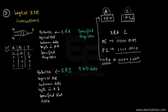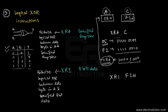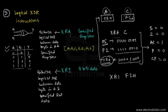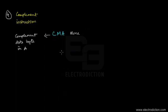To perform the same operation using XRI, we don't need register C. We simply write XRI F2H, which directly XORs F2H with the accumulator data 05H, generating the same result stored in the accumulator. The XRA operand can be any register from A to L. The flag bits are affected as shown for these XOR operations.